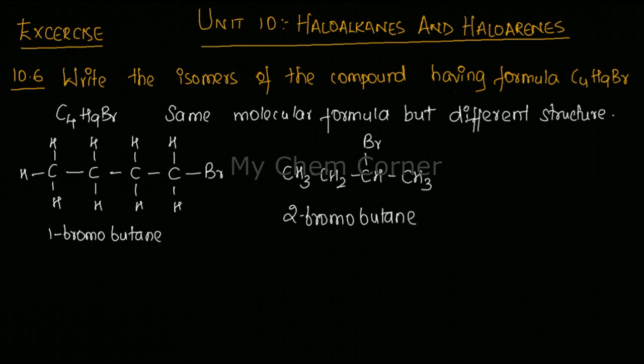Now consider the first compound here, that's 1-bromobutane, and what I'm going to do is I'm going to just take one of the carbons and put it as a branching. Of the four carbons, one carbon I'm going to take and put it as a branch. So what I'm going to do is I'll preferably take the last carbon here.